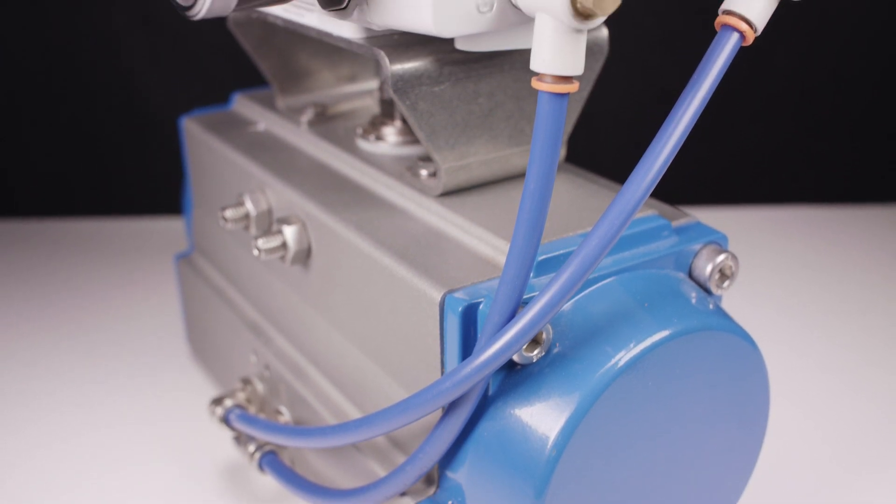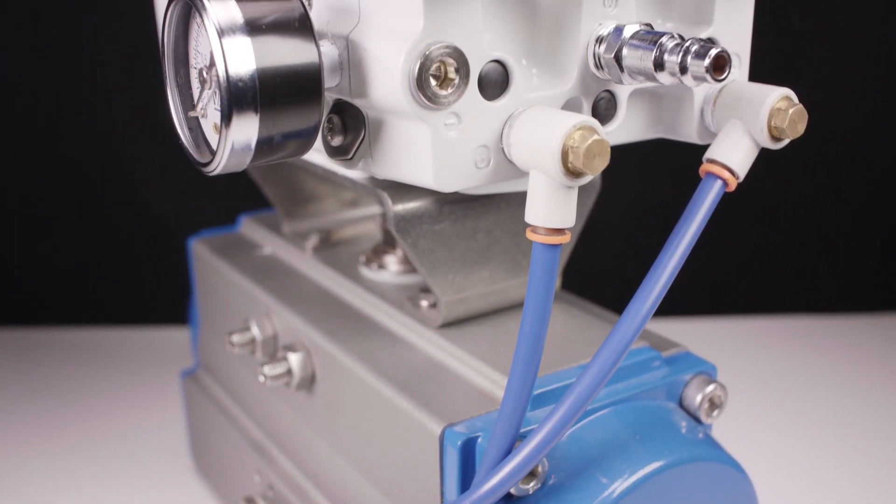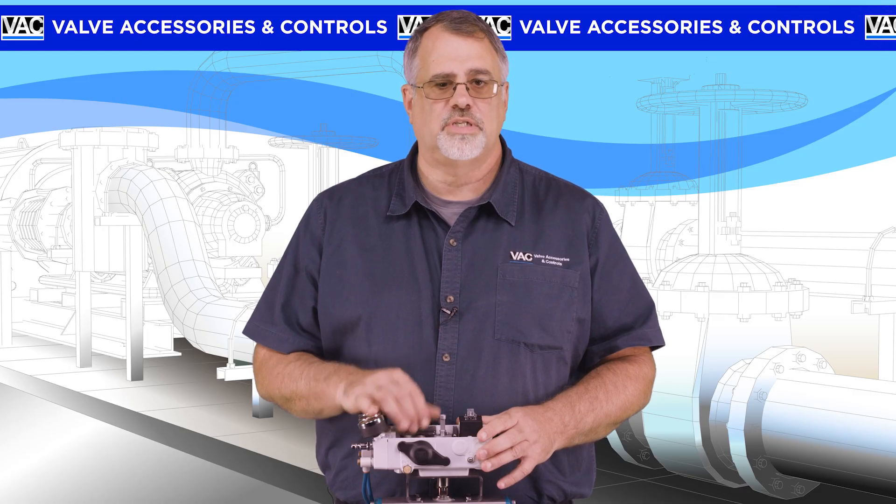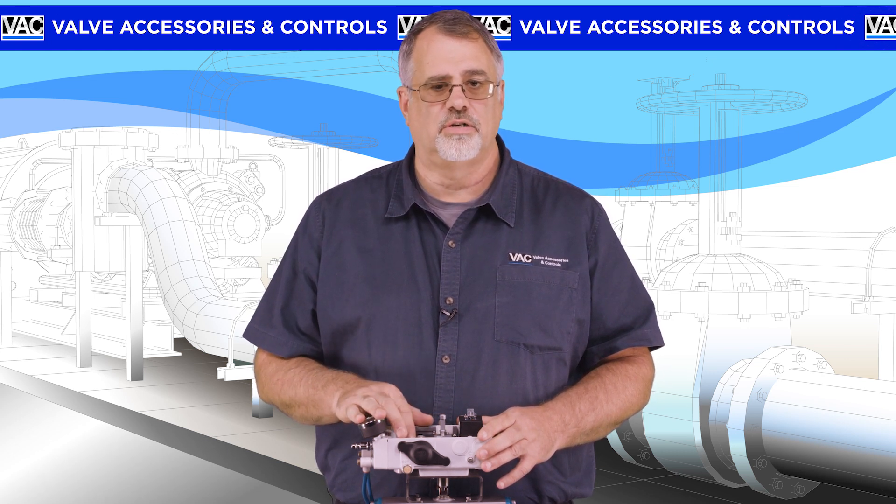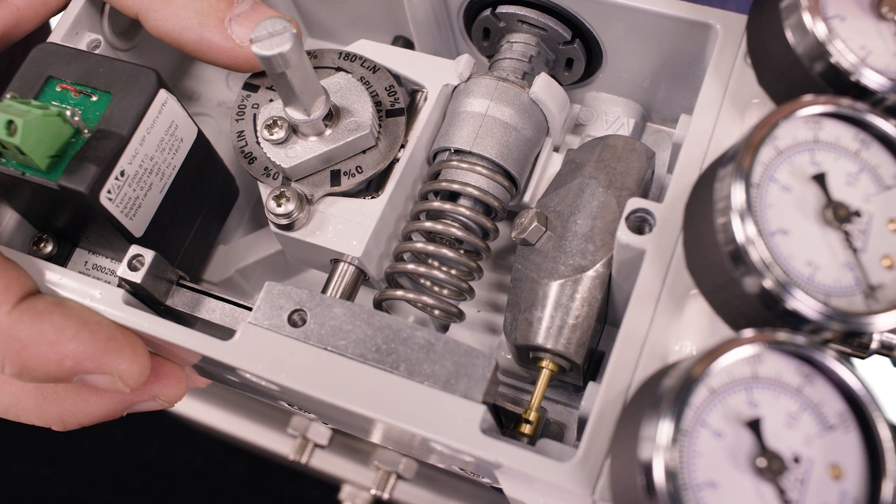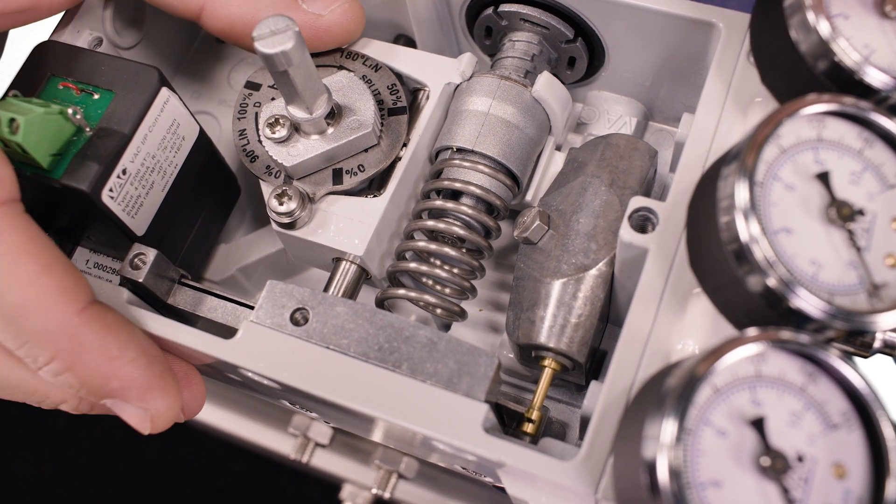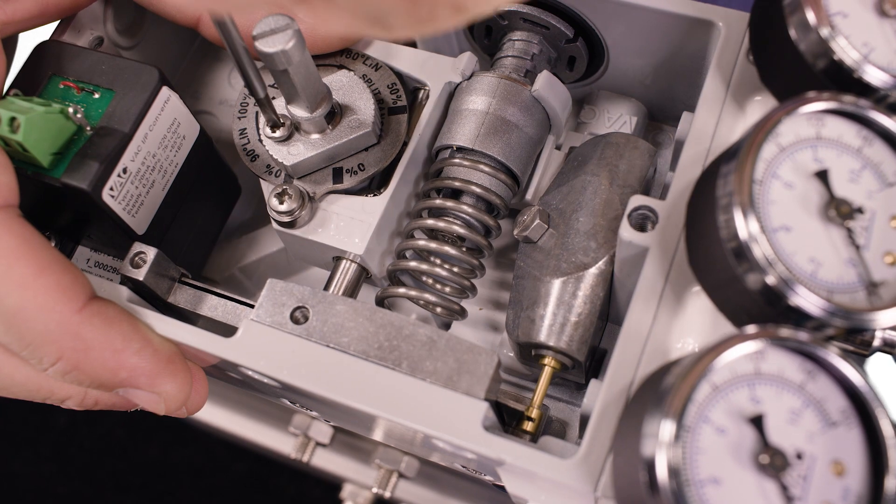With the positioner mounted and tubed to the actuator, and the actuator in the minimum signal position, the first step is to set the cam. Make sure that there is no error applied to the positioner at this point. Loosen the cam nut locking screw about two turns, and then loosen the cam nut just enough to let the cam move.